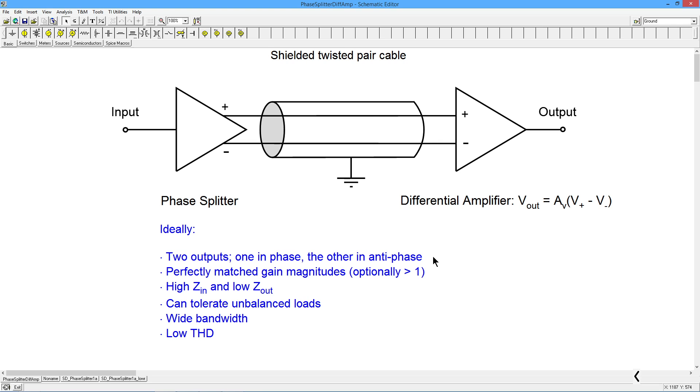In other words, exactly 180 degrees out of phase, the two gains would be perfectly matched. Whatever you get out of this one is what you get out of this one. Optionally, could be greater than one, you could have a phase splitter that has a gain of five, but typically it would be one, possibly more.